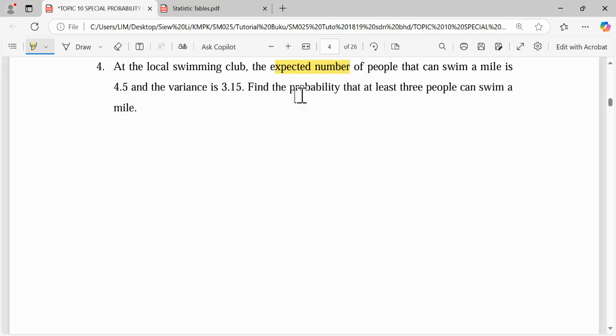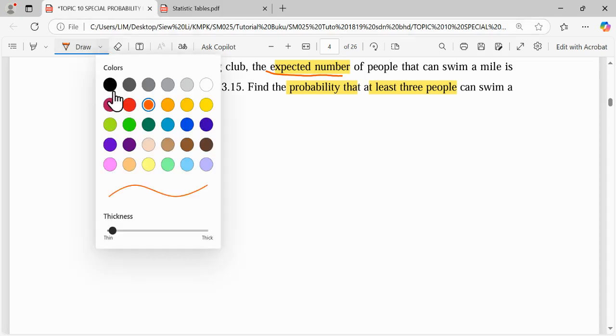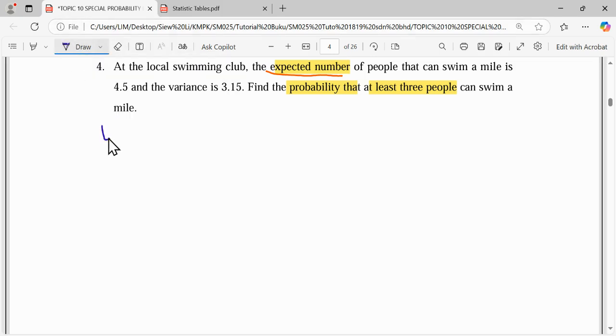The expected number of people that can swim a mile is 4.5 and the variance is 3.15. Find the probability that at least three people can swim a mile. The information given here shows the expected number, which is the mean, gives you 4.5 and variance is 3.15. What you need to find here is the probability X is at least, meaning more than or equal to 3.